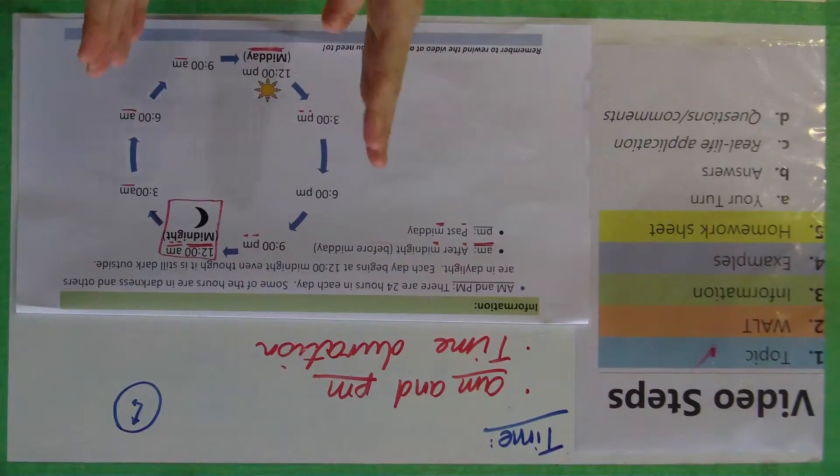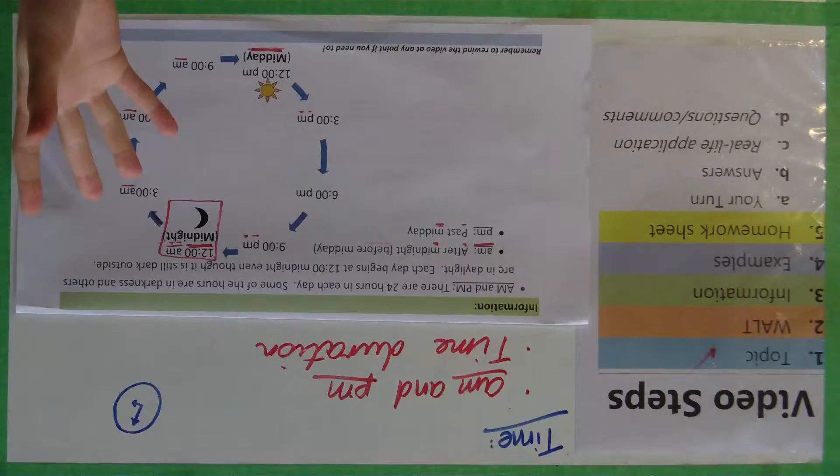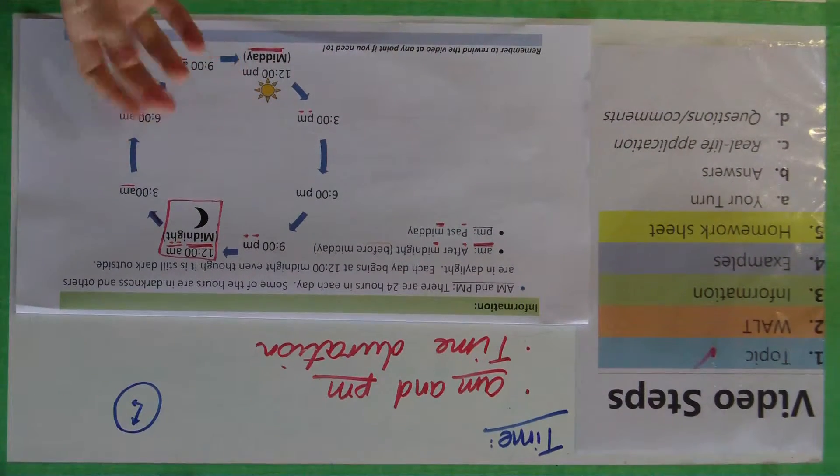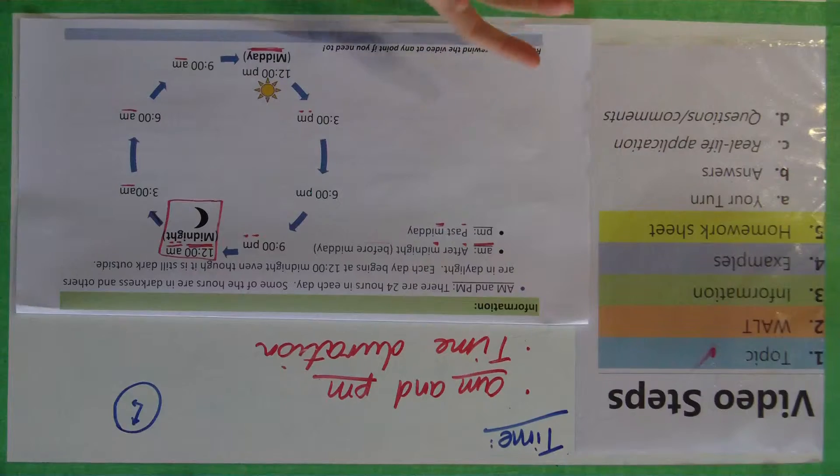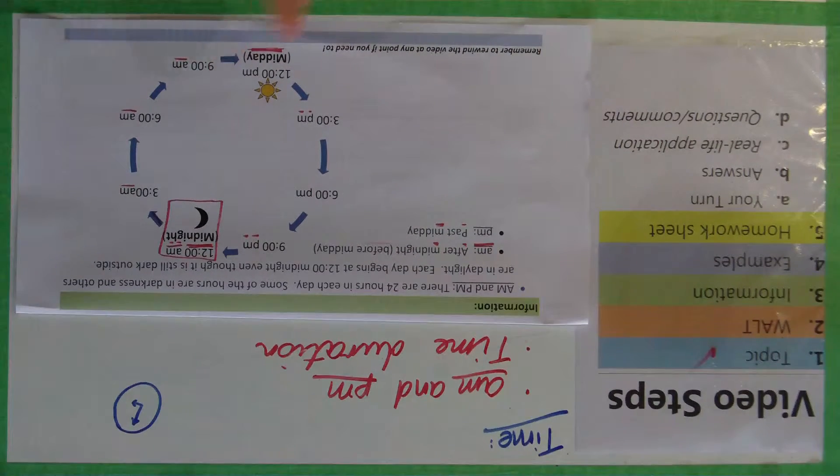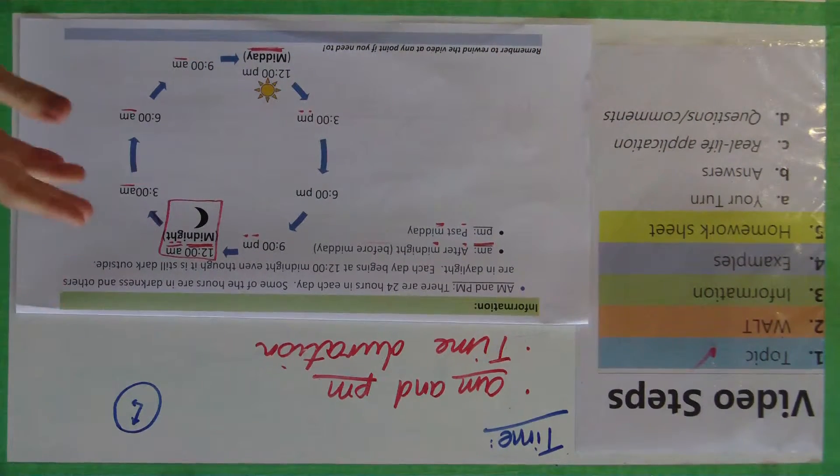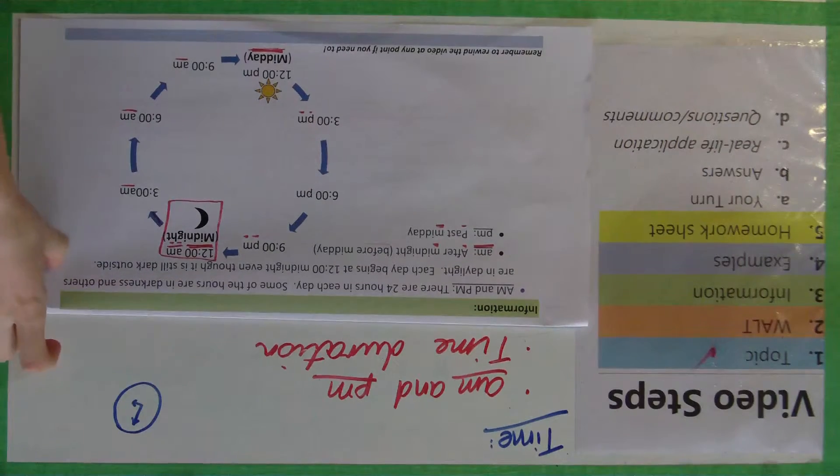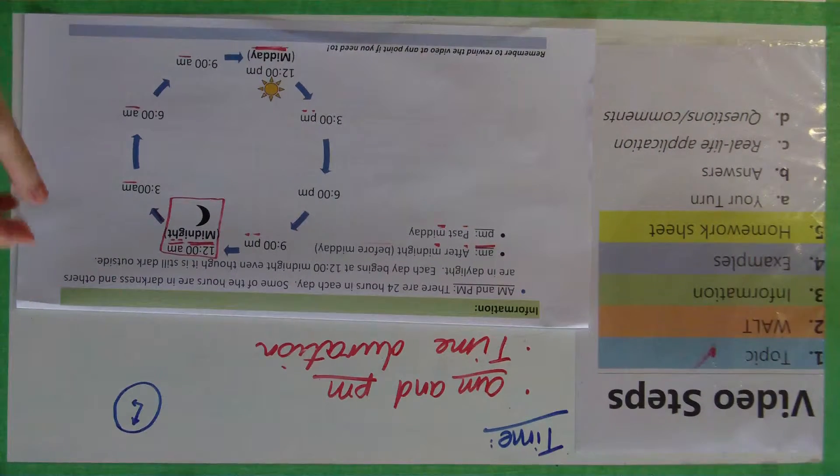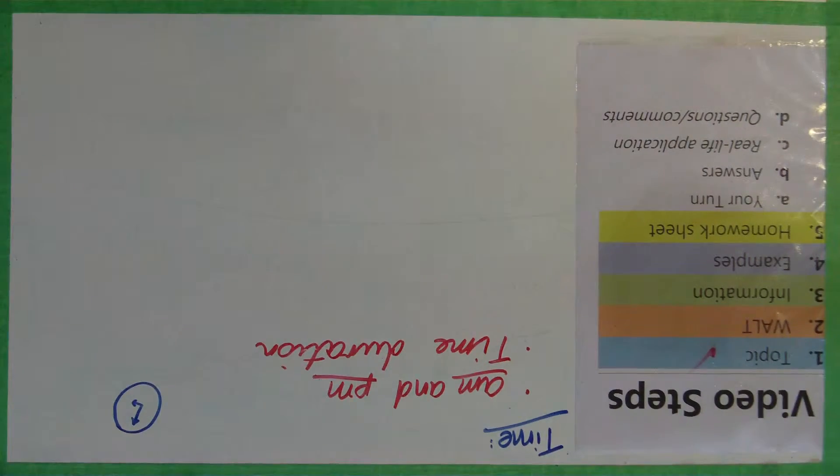Time duration is just looking at, well, if I went to the shops at 5 o'clock in the afternoon, I came home at 6 o'clock, or I arrived home at 6 o'clock, how much time had passed? Or how long was I out there for? Just remember to rewind the video at any point if you need to.